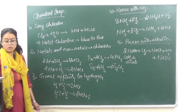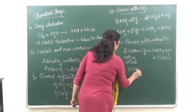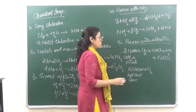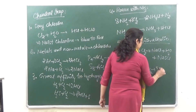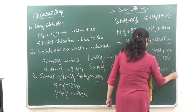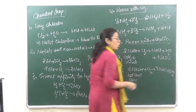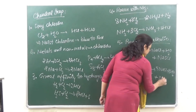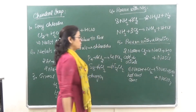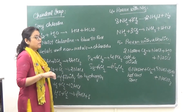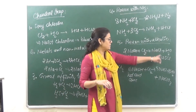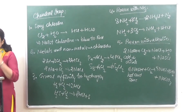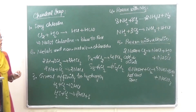When we do the same reaction with hot and concentrated NaOH, we again get NaCl and water, but the third product here is sodium chlorate (NaClO3) instead of sodium hypochlorite. To remember: the two common products in both reactions are NaCl and water; the different product is sodium hypochlorite (NaOCl) in the cold dilute case, and sodium chlorate (NaClO3) in the hot concentrated case.